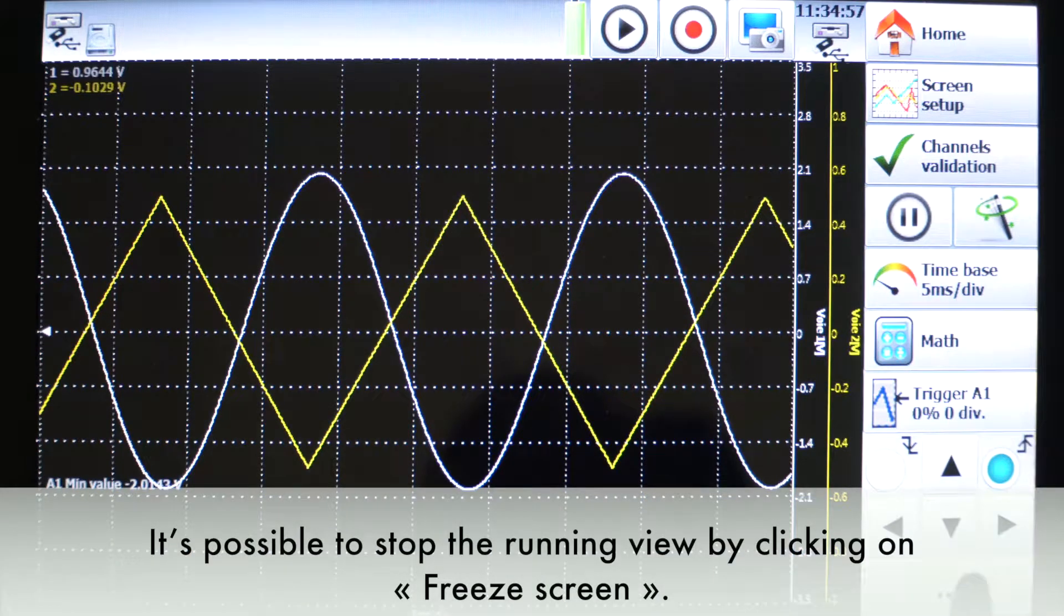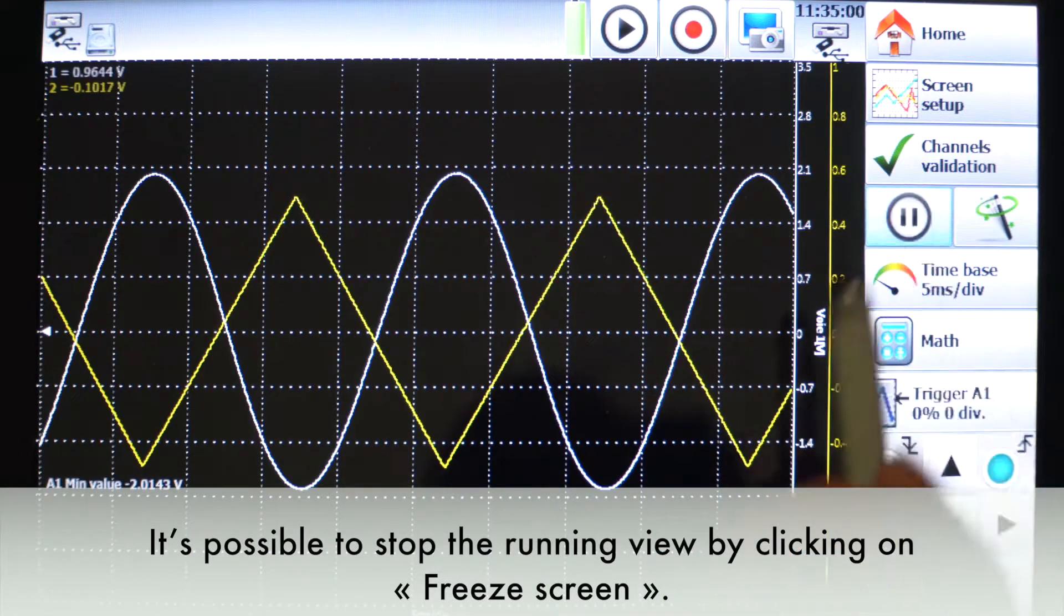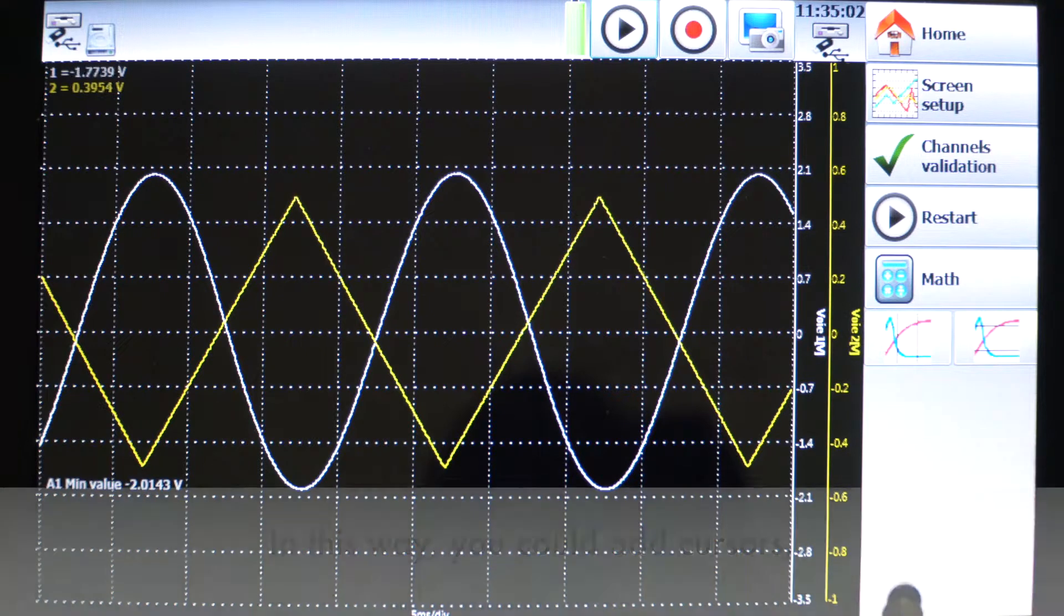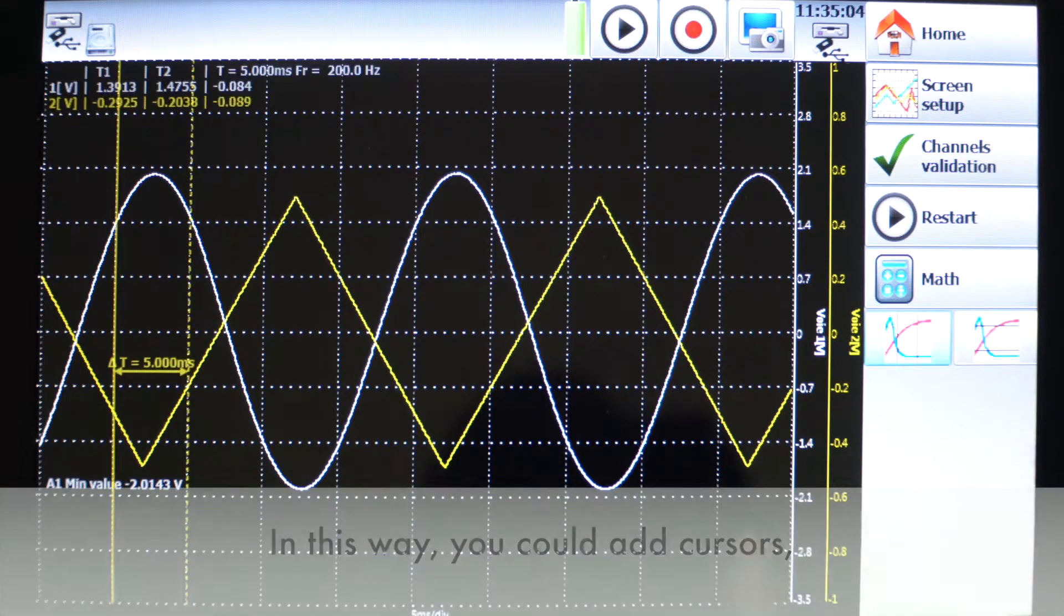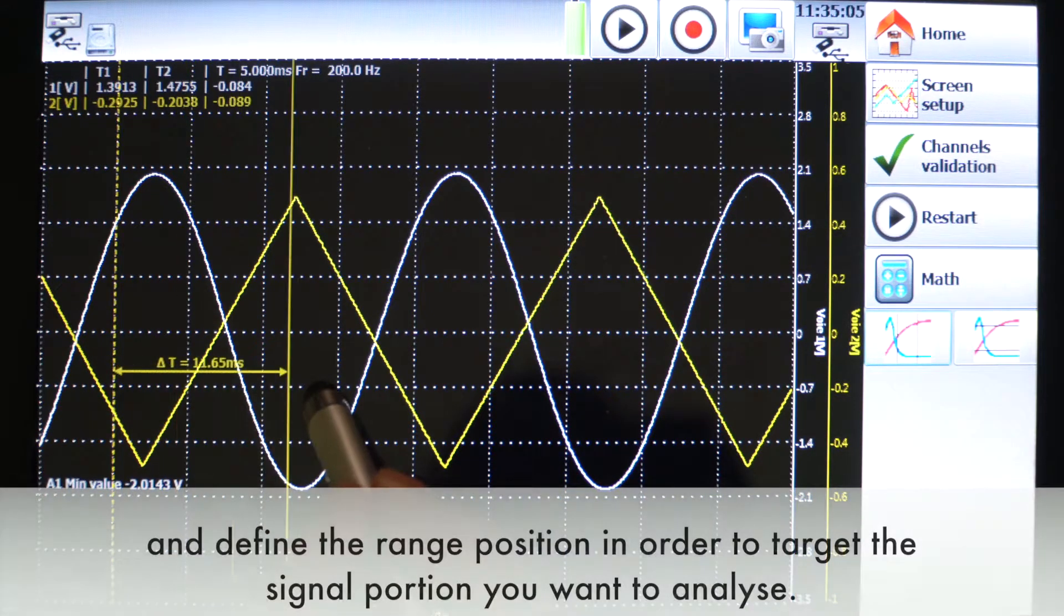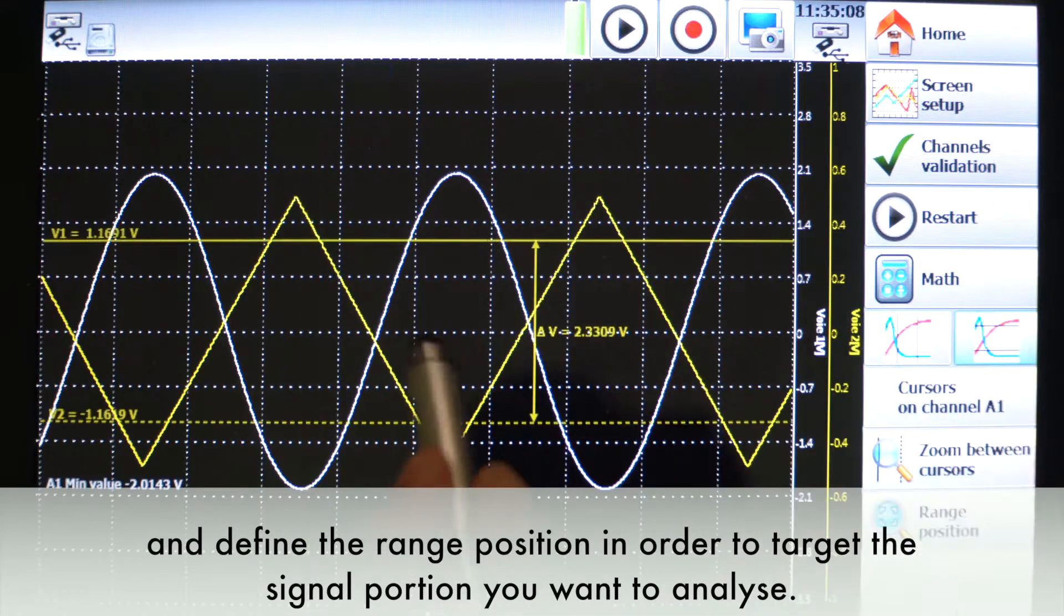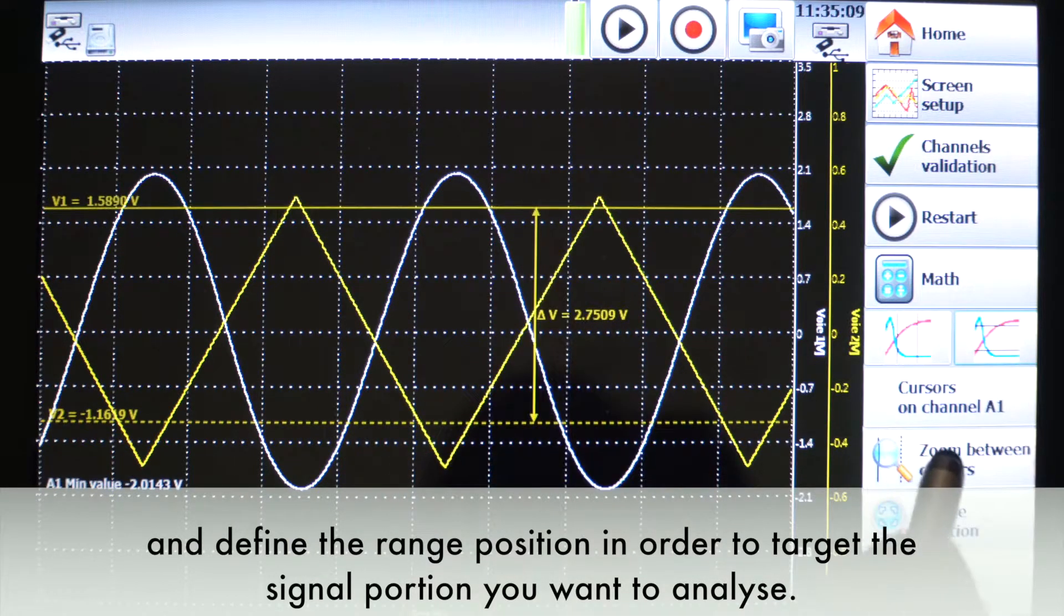It's possible to stop the running view by clicking on freeze screen. In this way you could add cursors, use zoom, and define the range position in order to target the signal portion you want to analyze.